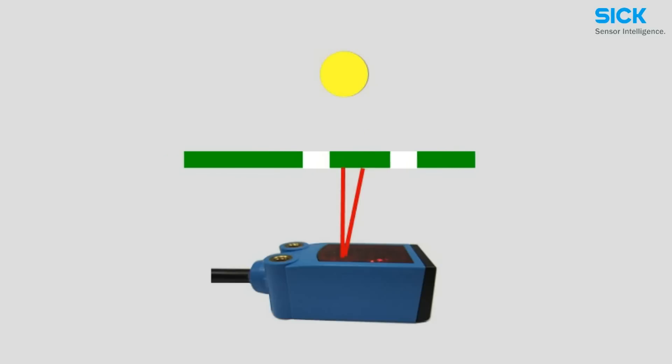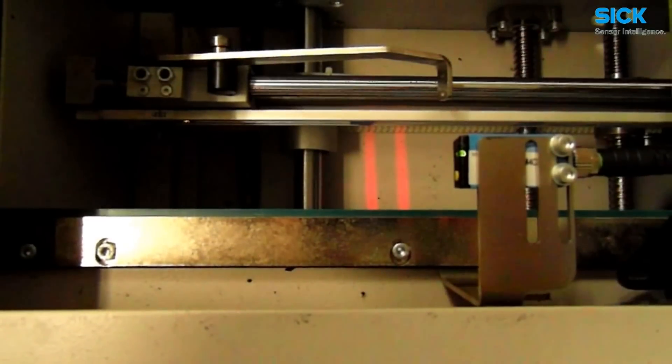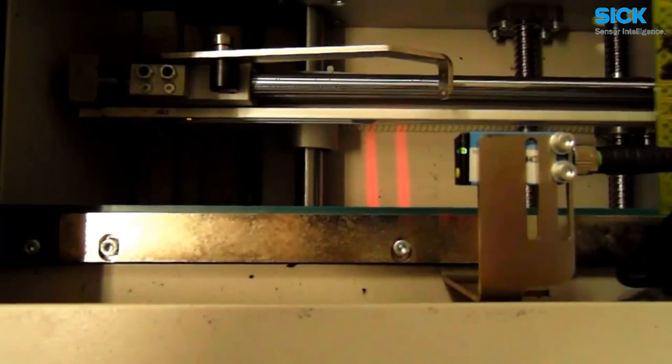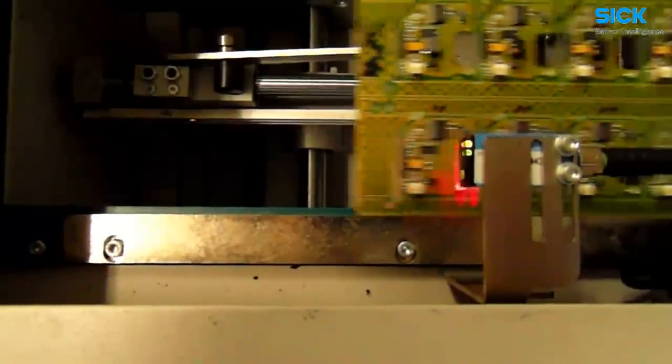During detection, the sensor signal remains stable even if one light spot shines through a gap. Detection ends when both light spots are no longer on the target. Signal interruption is therefore avoided and machine availability is significantly improved.